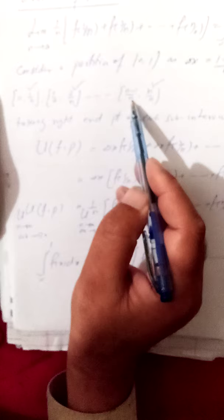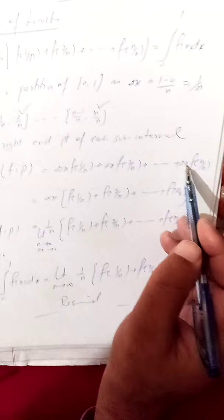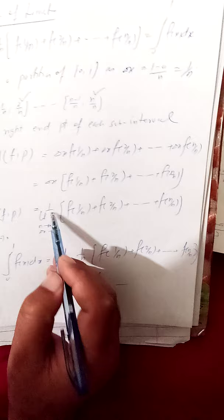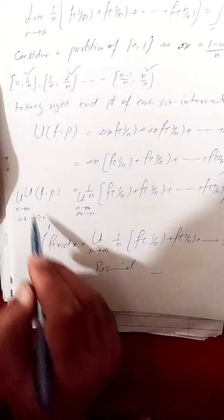Taking the right endpoint of each sub-interval, U(f,P) times delta x: f(1/n)·delta x, f(2/n)·delta x, f(n/n)·delta x. Now delta x equals 1/n. Placing f(1/n), f(2/n), ..., f(n/n), and as n tends to infinity, delta x tends to 0, this gives the limit from 0 to 1 of f(x) dx. This is the required result.